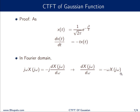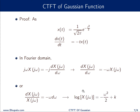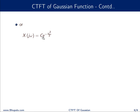By simple rearrangement, we can write this as dX(jω)/dω = −ω·X(jω), since the j's cancel and moving the negative sign over gives this equation. Bringing X(jω) to the right-hand side and dω to the right-hand side, and then integrating, we get: log X(jω) = −ω²/2 + k. Taking the anti-logarithm, X(jω) = C·e^(−ω²/2), where C = e^k.